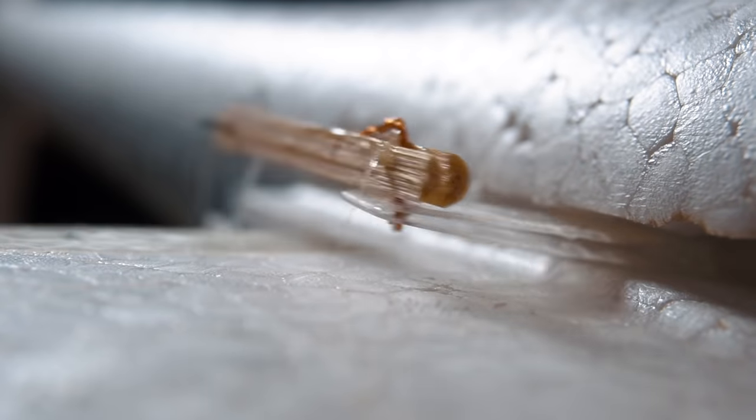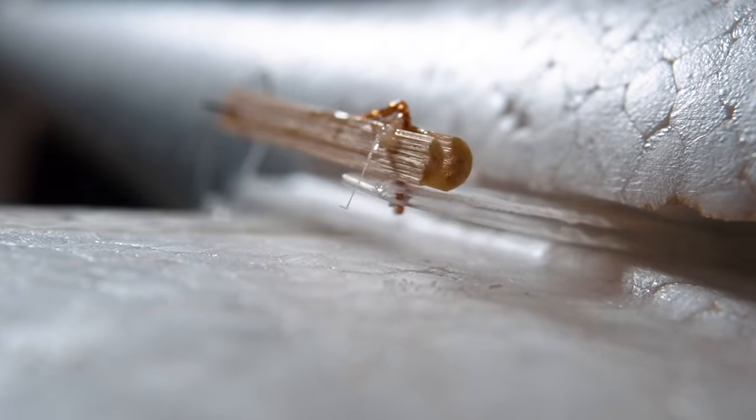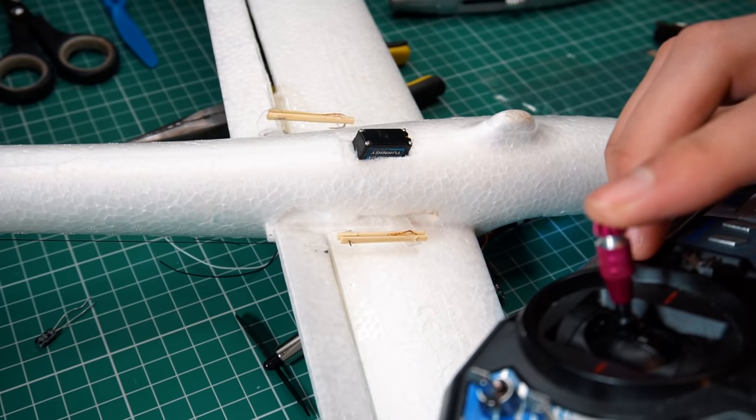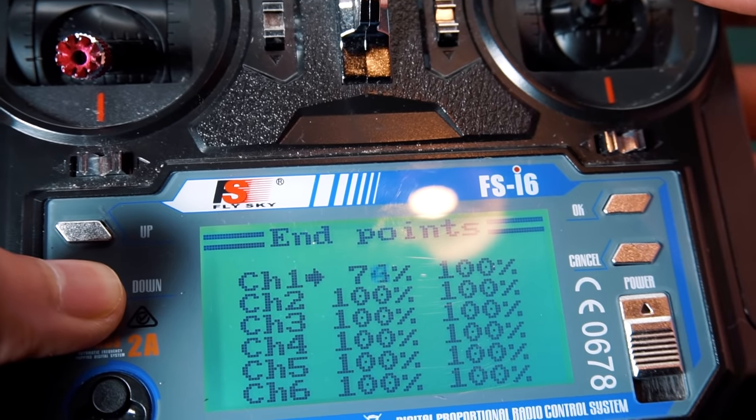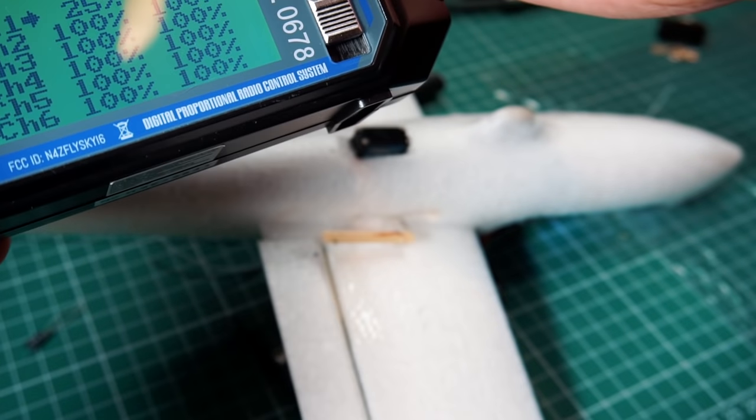If you're asking yourself how I managed to put a servo in there, that's why I recommend you watch the previous video where I did the whole thing. And now I have to set up the radio so that the servo and the ailerons move just the right amount.